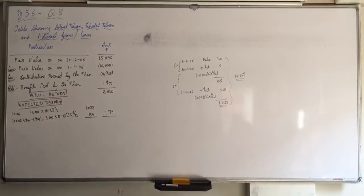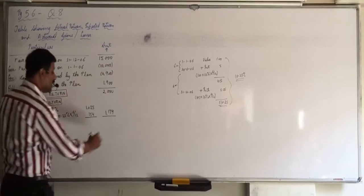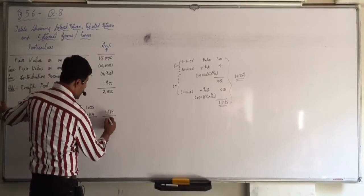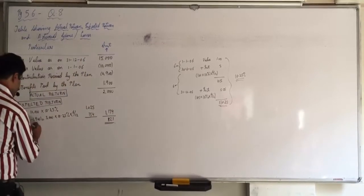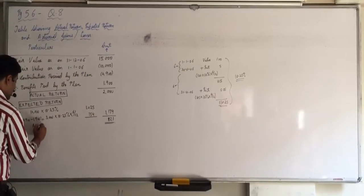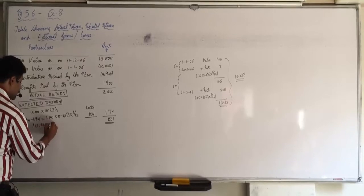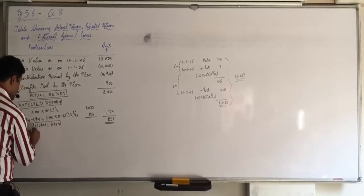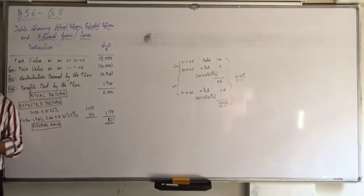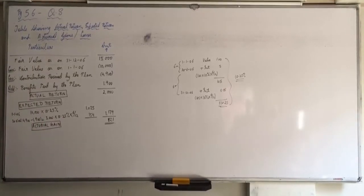Means we expect a return of 1179 but we actually got a return of 2000. So there is an actuarial gain of 821. That is an actuarial gain. Positive means it is a gain. So these three things are asked in the question. Anyone having any doubt in this? All are clear with it?